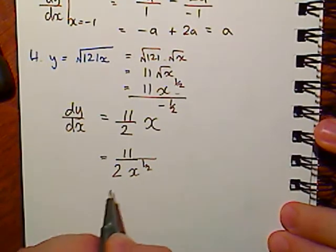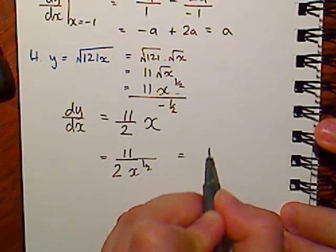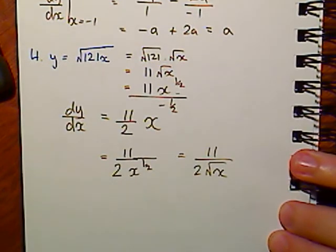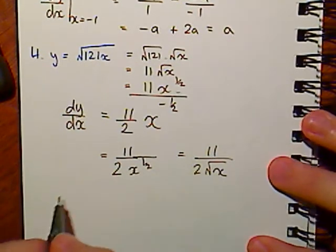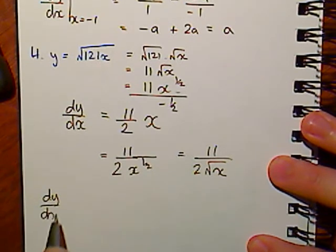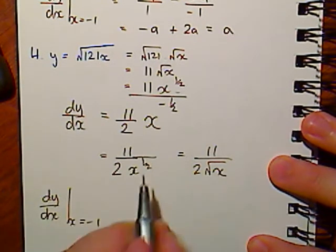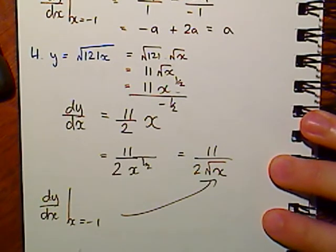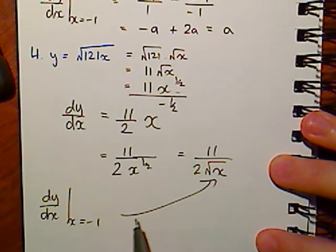Which I could write as 11 over 2 square root of x. And we're going to run into the same problem as we did before. Because when I want to evaluate this at my negative number, what we see here is this will not be defined. So the derivative does not exist here.